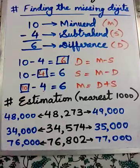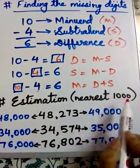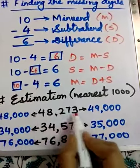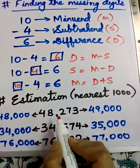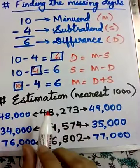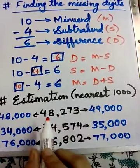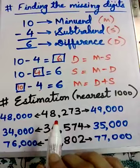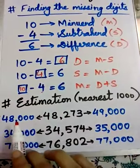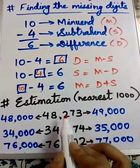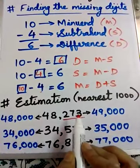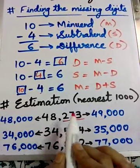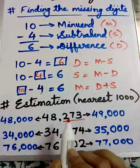Now come to the next concept, estimation to the nearest thousand. This is based on exercise 3.4. To understand this, suppose I have to estimate these three numbers. Now students, 48,273 lies between 48,000 and 49,000. We have to find which number is nearest to which thousand. For that, we have to see this digit. If it is more than 500 or equal to 500, then it will go to the next thousand. But if it is less than 500, it goes to the previous thousand.